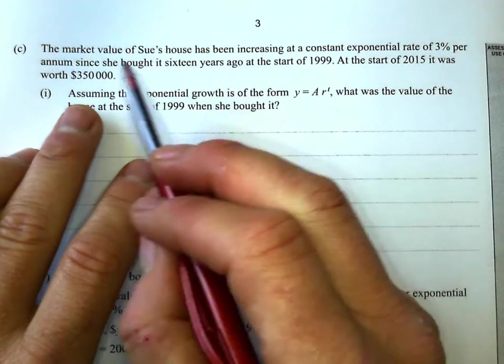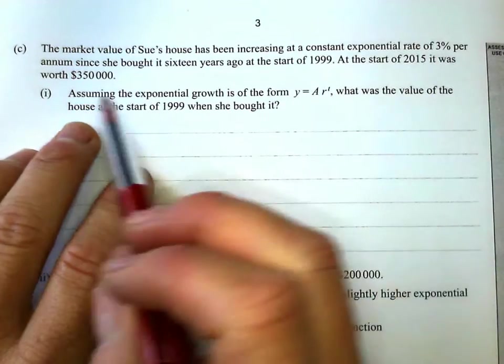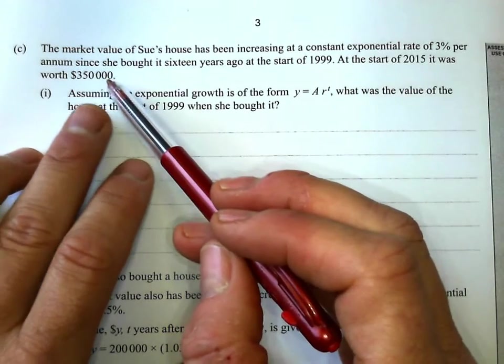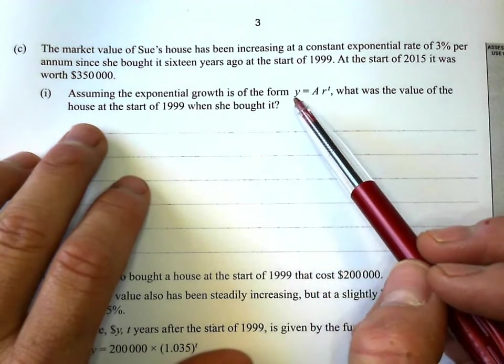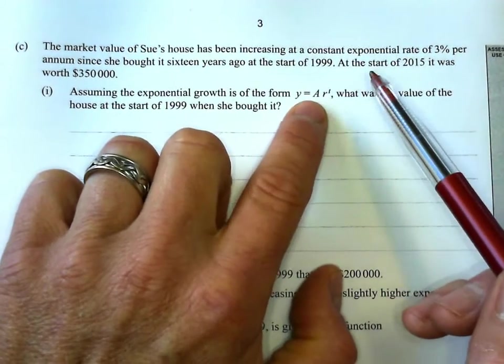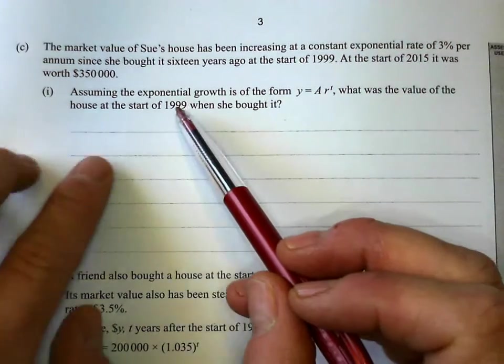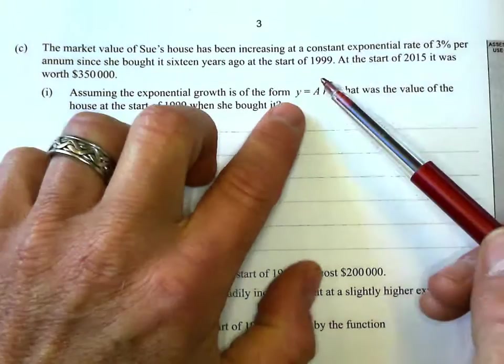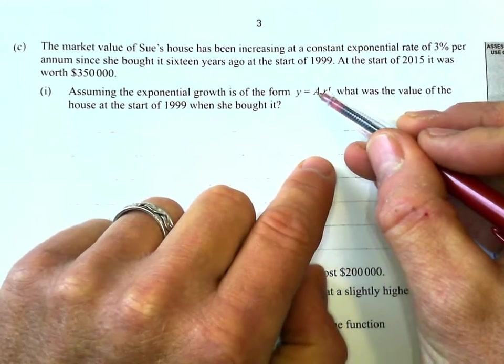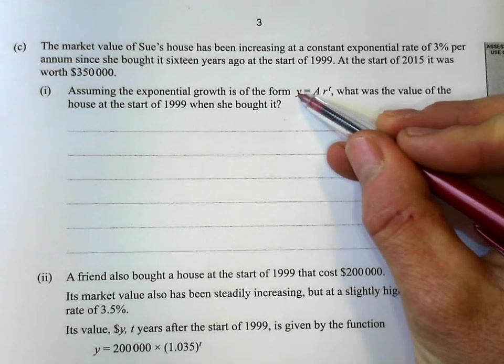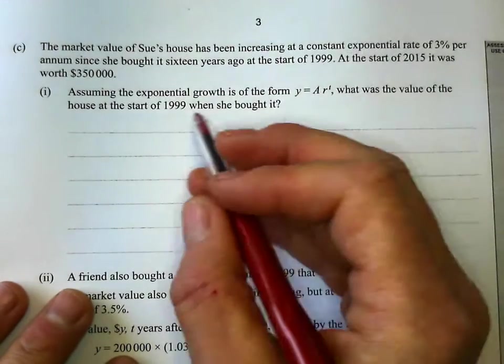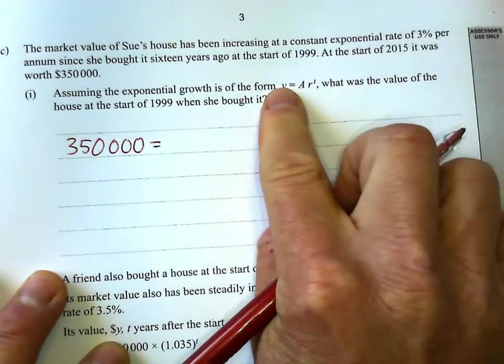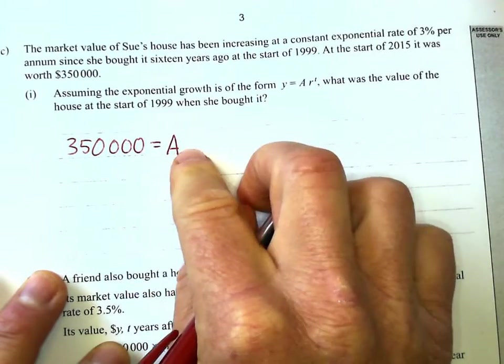All right. The last two problems of question one. We've got the market value of Sue's house has been increasing at a constant exponential rate of 3% per annum per year since she bought it 16 years ago at the start of 1999. And now it's gone up to $350,000. Assuming the exponential growth is of this form, which should look somewhat familiar, kind of like compound interest formula, what was the value of the house at the start of 1999 when she bought it? So they're asking for the original amount at 1999. Now, when we have this formula, this represents the original amount, like the principal. And this is the current amount or the new amount over here. So I'm just going to set up this equation.